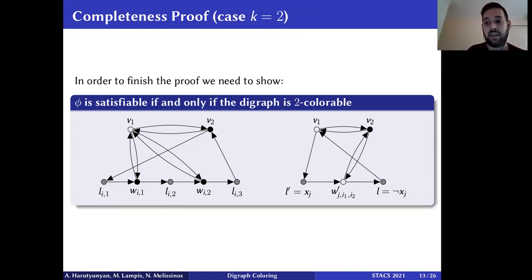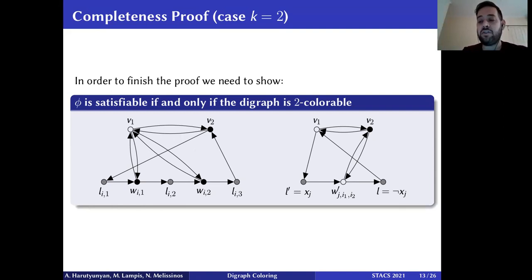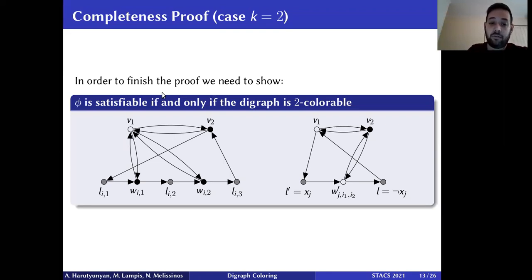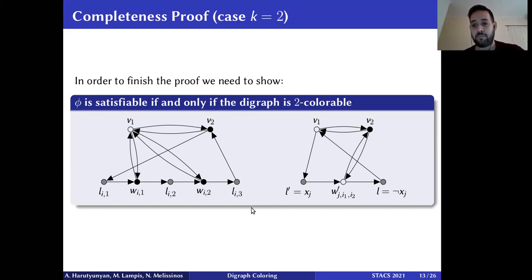The generalization to k colors is straightforward: we use the same proof but add extra vertices connected to every existing vertex with digons, forcing a new color. The same exact proof applies by just adding those vertices.